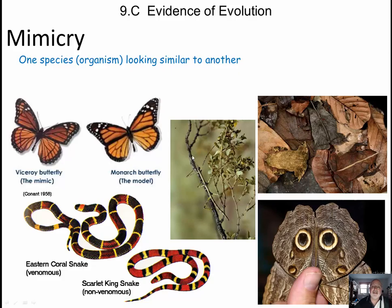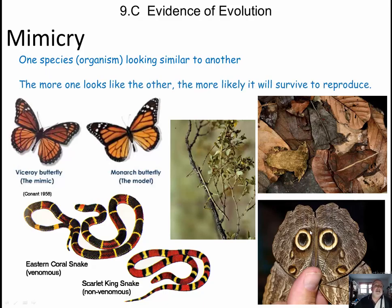We have a stick bug that actually looks like branches or parts of a plant. We have three frogs that are blending in with the leaf matter very well. And we have a moth that actually has eye spots — called an owl moth — on the back wing, so that even when the moth is looking one direction, something trying to sneak up behind it thinks those are eyes and maybe thinks twice. The more one organism looks like another, the more likely it survives to reproduce.